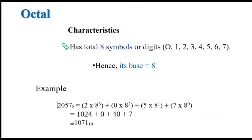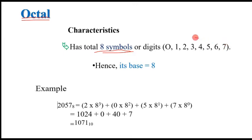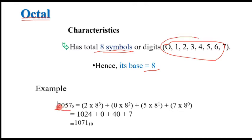The second digital numbering system is octal. Octal has a total of eight symbols. Binary has only two symbols — zeros and ones — but octal has eight symbols or digits: zero, one, two, three, four, five, six, seven. Since it is octal, its base is eight. A simple example is the number 2057 with base eight — this base eight indicates the numbering system is octal.